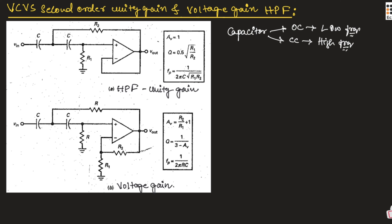Always remember: for a low pass filter, the resistor is connected first, then the capacitor. For a high pass filter, capacitors are connected first and then resistors. The remaining part of the circuit stays the same.